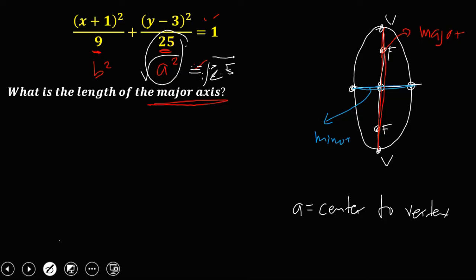And that's equal to 5. So again, A from center to vertex, that's A, which is equal to 5, and also this one, A, that's equal to 5. So the length now of this major axis, that's 5 plus 5, is 10.